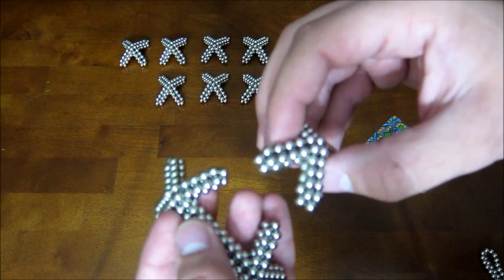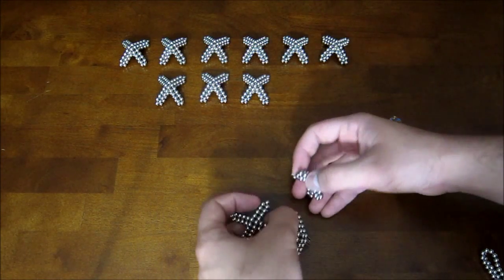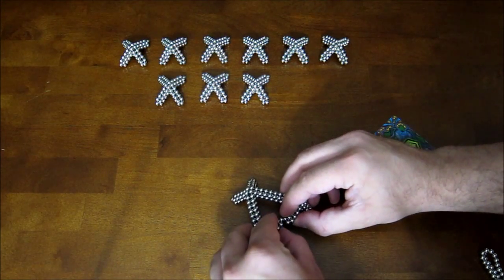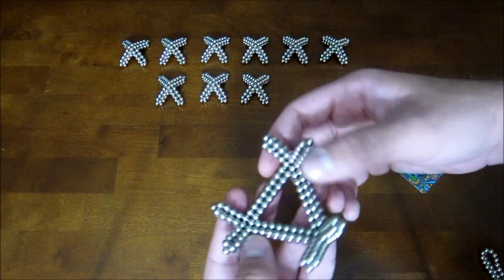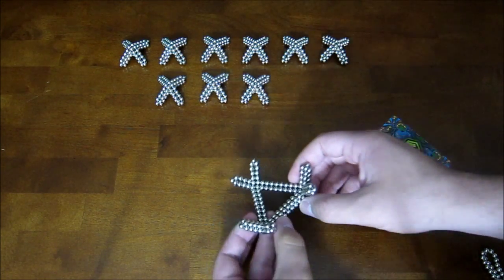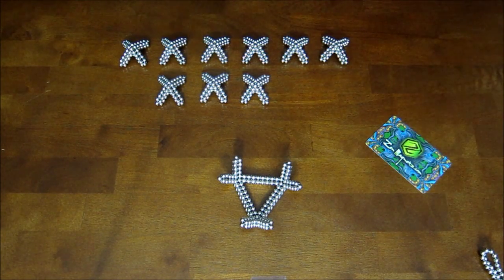And then you take a third one and do the same thing. And you can kind of see how it's starting to form a cube octahedral shape and you just keep going with the other nine of these until you have the shape finished.